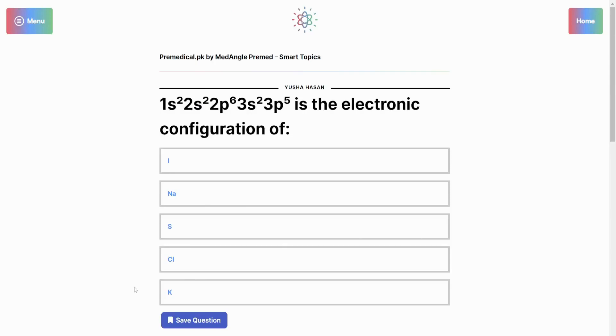Hello everyone! In this question, we have given an electronic configuration 1s²2s²2p⁶3s²3p⁵ and we are asked which atom this electronic configuration belongs to. Let us find this out.